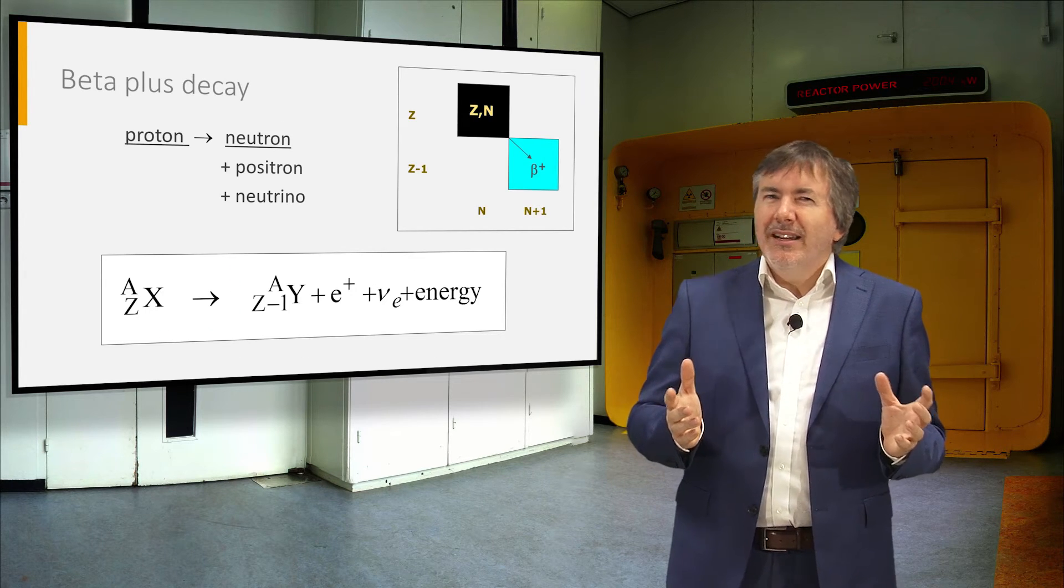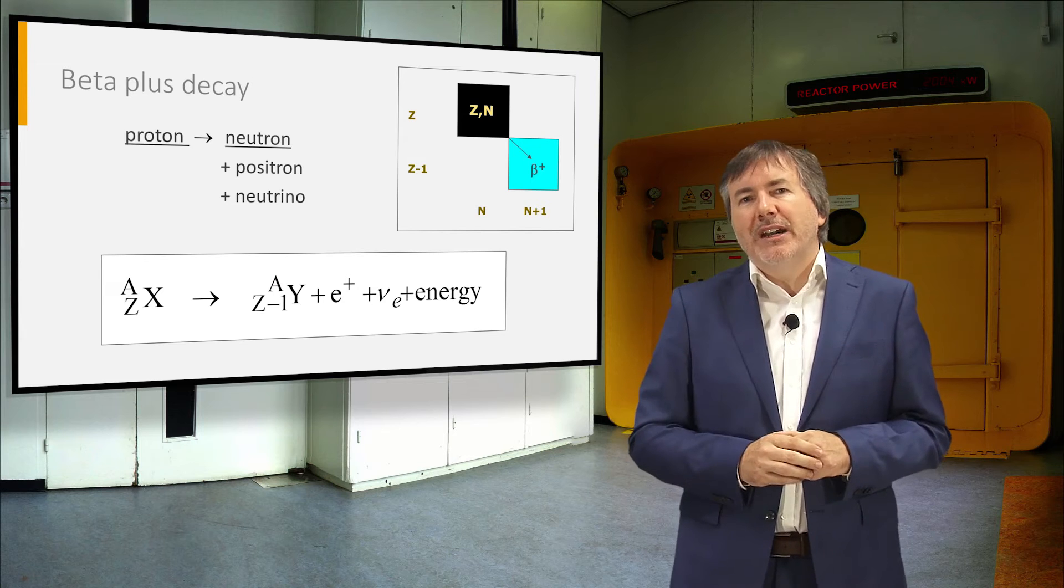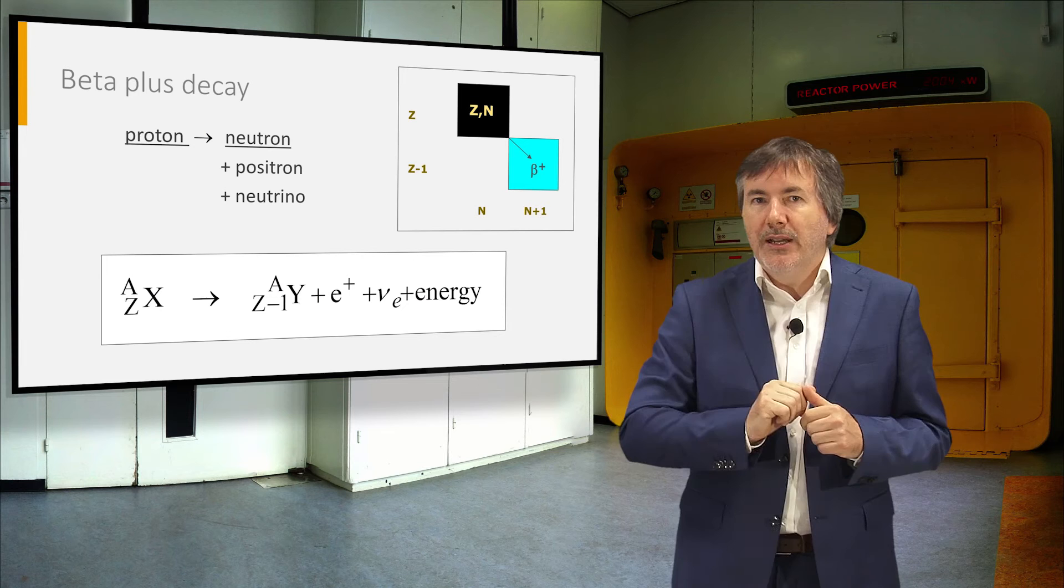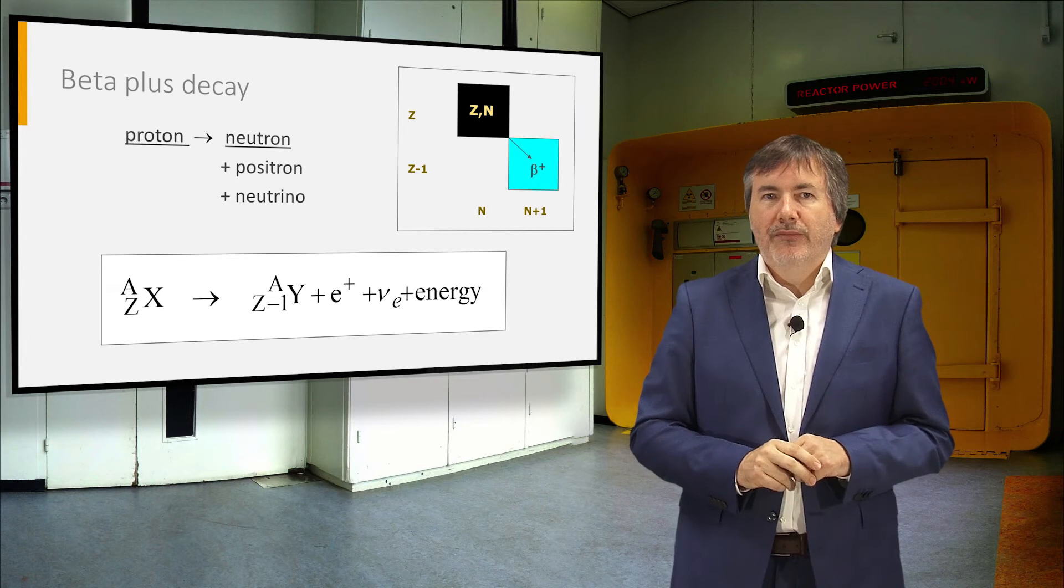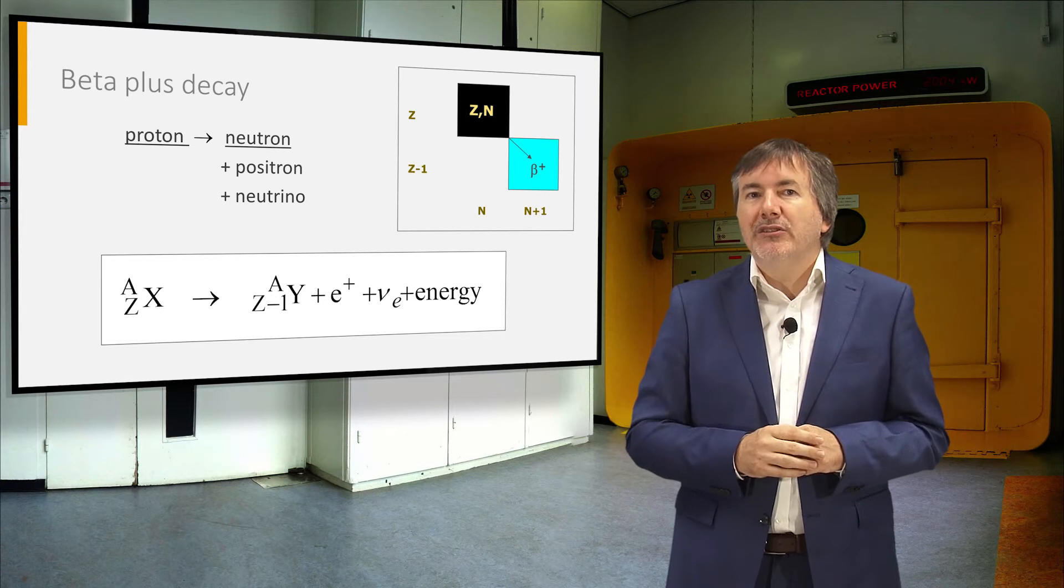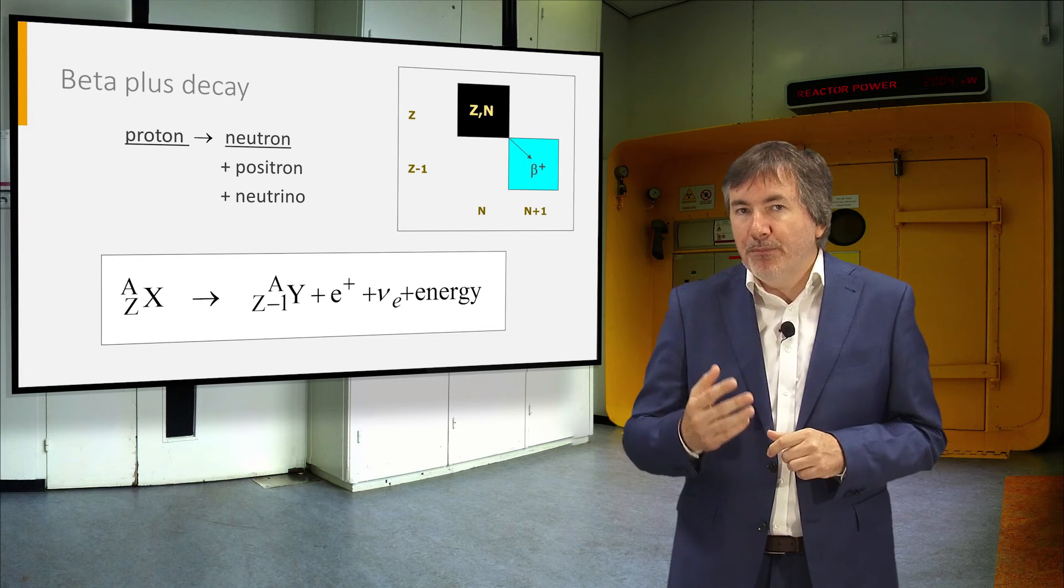Beta-plus decay is somewhat opposite to beta-minus decay. It converts a proton into a neutron with emission of a positron and a neutrino. The positron is the anti-matter counterpart of an electron, and has a positive charge.